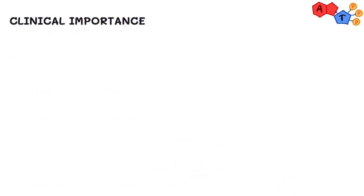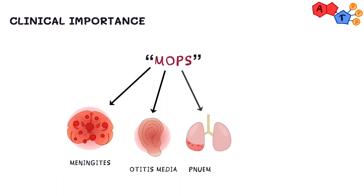Pneumococci are a prominent cause of MOPS, which stands for meningitis, otitis media, pneumonia, and sinusitis. They're also a cause of sepsis in asplenic patients and those with sickle cell anemia, and they're known to cause wide variety of diseases that include the upper respiratory tract and other organs as well.